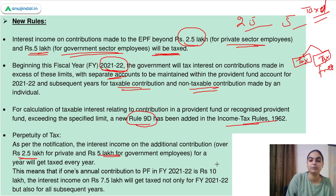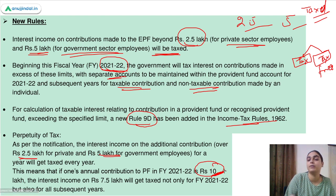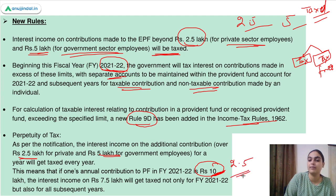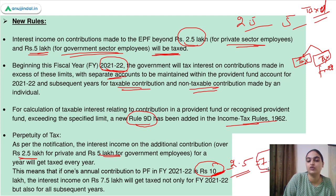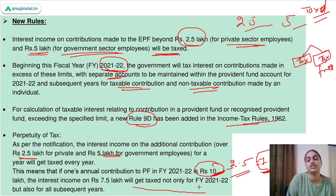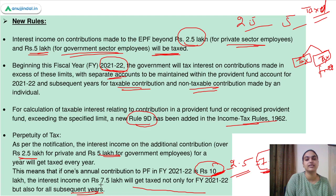For example, suppose a private employee makes a contribution of rupees 10 lakh. As he is a private employee, 2.5 lakh will be exempt. So 10 minus 2.5 equals 7.5 lakh — this will be the amount on which interest income is taxed. This interest income on 7.5 lakh will be taxed not only for financial year 2021–2022 but for subsequent years as well.